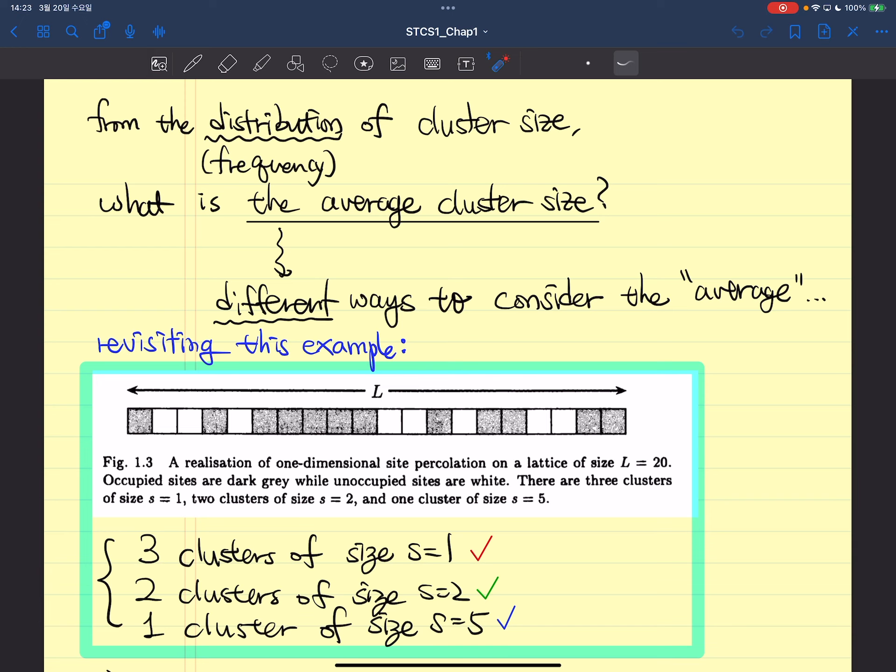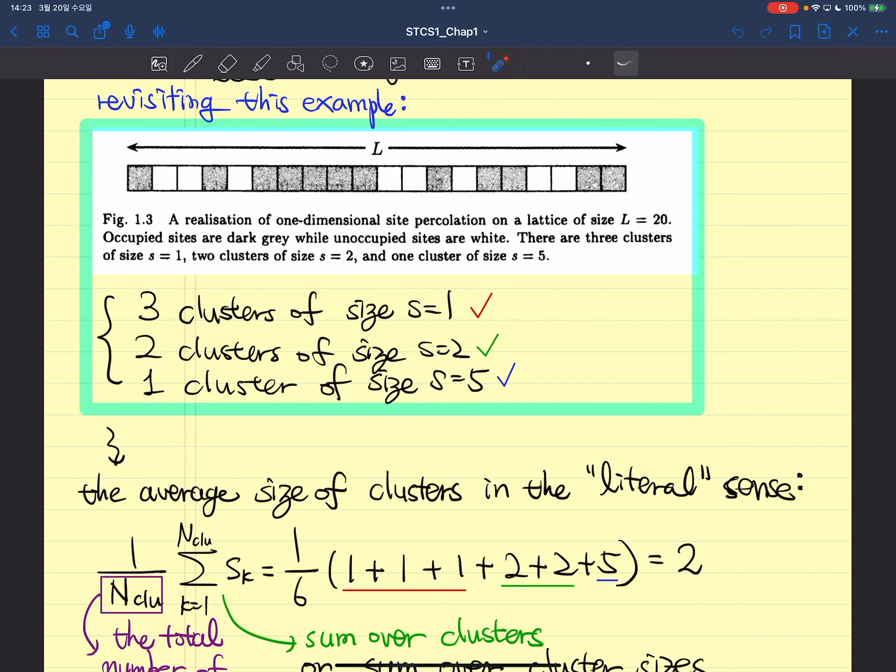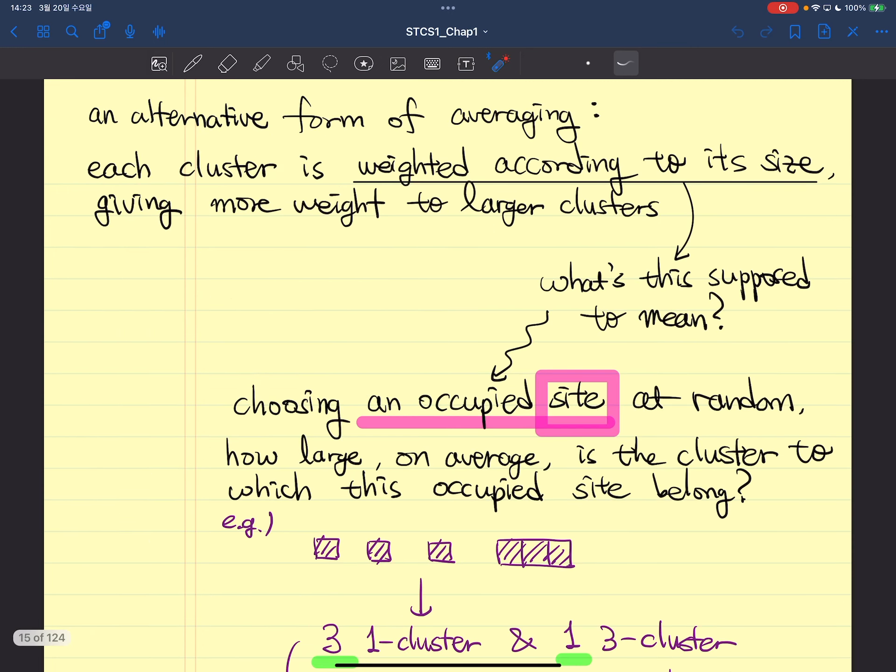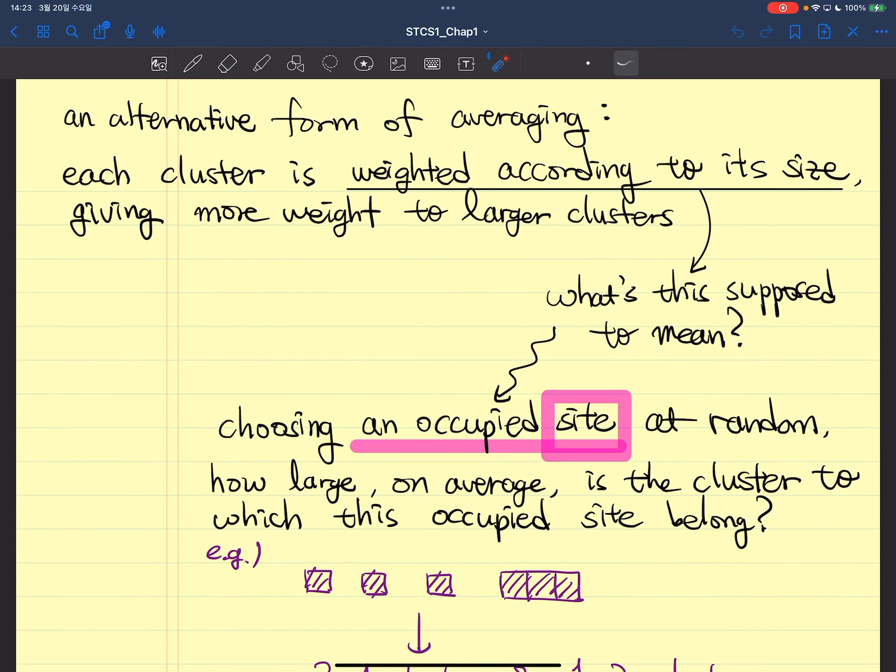A more general question is the distribution of cluster size, but let's start with average cluster size first. As I already mentioned, the average size of the cluster in the literal sense, by treating each cluster as a single unit, is the familiar form. Just sum everything and divide by the number of clusters, not sites.